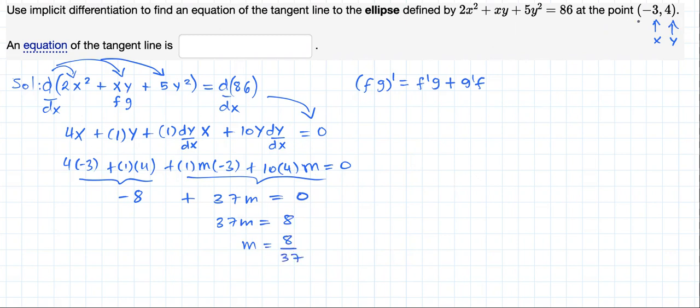Now we have a point here, (-3, 4). With the slope and the point, we can find the equation of the tangent line. I'm going to use this point-slope form with x1 = -3 and y1 = 4. So y minus 4 equals 8/37 times (x minus negative 3).